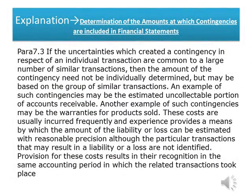Paras 7.3: If the uncertainties which created a contingency in respect of an individual transaction are common to a large number of similar transactions, then the amount of the contingency need not be individually determined but may be based on the group of similar transactions. An example of such contingencies may be the estimated uncollectible portion of accounts receivable. Another example may be the warranties for products sold. These costs are usually incurred frequently and experience provides a means by which the amount of the liability or loss can be estimated with reasonable precision, although the particular transactions that may result in a liability or a loss are not identified. Provision for these costs results in their recognition in the same accounting period in which the related transactions took place.